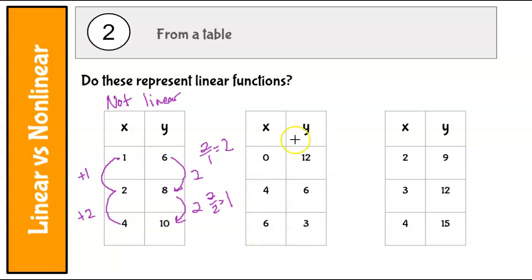How about this one? Take a look. What do you think? Is it linear or not linear? We're going down by 6. We're going up by 4. That's okay. We're allowed to do that. Then we're going down by 3 and up by 2.